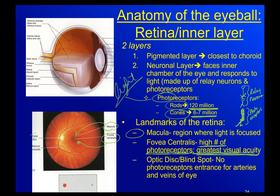On the opposite end is the optic disc, also known as the blind spot. There are no photoreceptors in this part of your eye. It's the entrance and exit for the arteries and veins going into and out of your eye. You can't have photoreceptors in the way of that doorway, which is why it's called the blind spot.